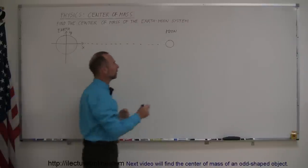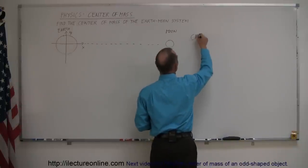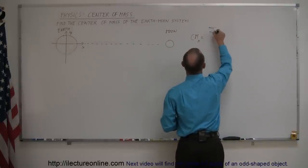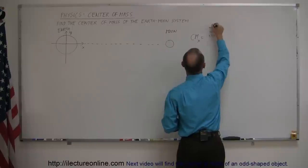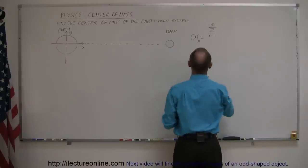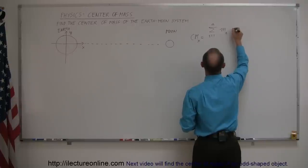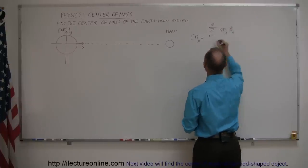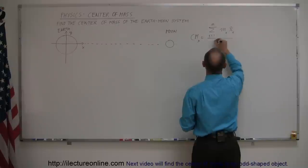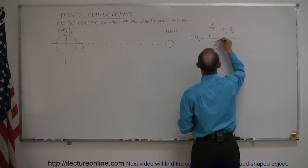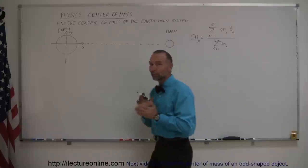Using our equation, the center of mass in the X-direction is equal to the sum from i equals 1 to N — in this case N is 2, there are only two objects — of the product of the masses of each times the X-coordinate of the center of mass of each, divided by the sum of the two masses from i equals 1 to N, where N equals 2.